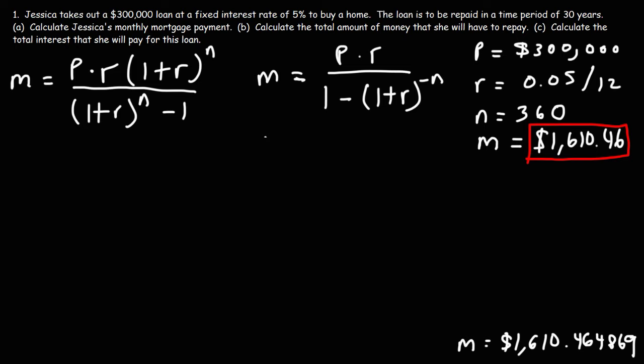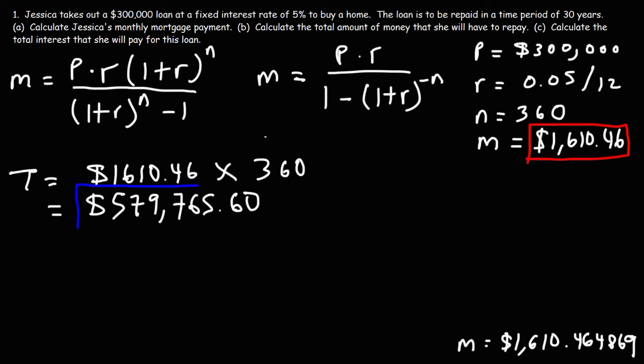So now that we have the answer to part A, let's move on to part B. Calculate the total amount of money that she will have to repay. So we know that she needs to make a total of 360 monthly payments. Because as was mentioned before, there's 360 months in 30 years. So the total amount that she's going to pay is going to be the monthly payment times the number of payments that she's going to make. So 1610.46 times 360. So that's 579,765.60. So that's going to be the total amount of money that she's going to pay.